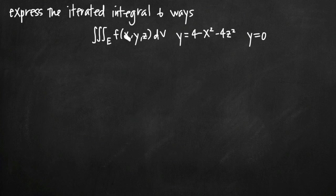We can express this integral in six different ways depending on the order of integration. Because we have three variables x, y, and z in a triple integral, we can integrate first with respect to x, then y, then z; or first with respect to x, then z, then y; or we can start with y, or we can start with z. If we write out permutations of that combination of variables, we'll see that we get six different ways to express the integral.